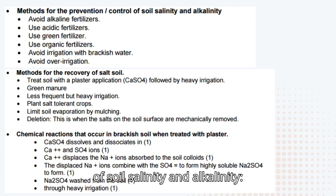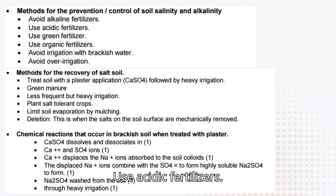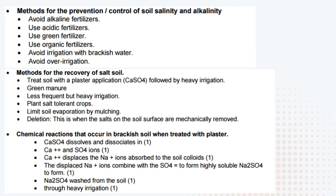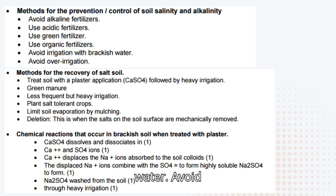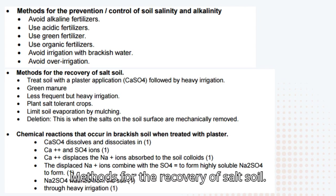Methods for the prevention and control of soil salinity and alkalinity: avoid alkaline fertilizers, use acidic fertilizers, use green fertilizer, use organic fertilizers, avoid irrigation with brackish water, and avoid over-irrigation.